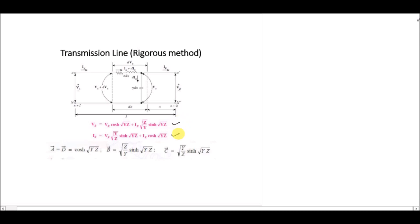For the long transmission line, the two equations are derived using the rigorous method and are already expressed in terms of Vr and Ir. The terms with Vr give constants A and C, and the terms with Ir give constants B and D, representing the long transmission line model.